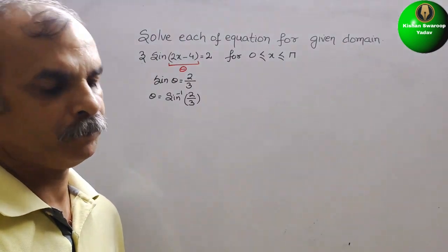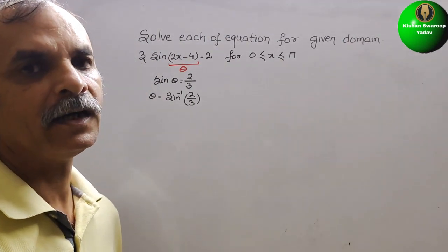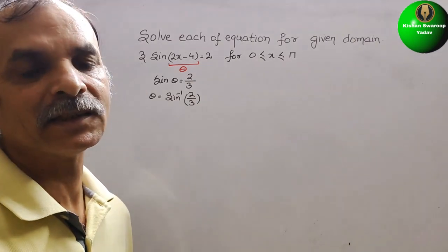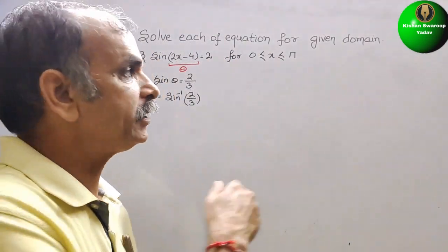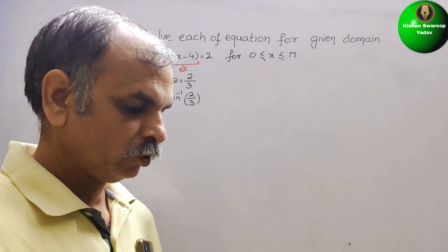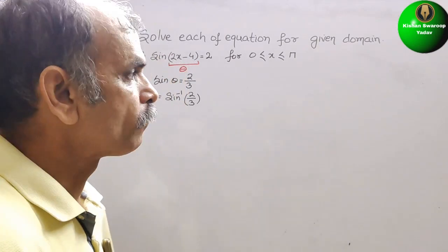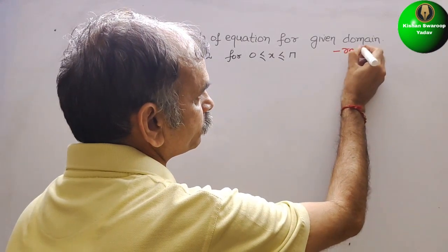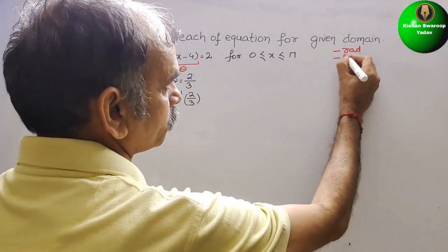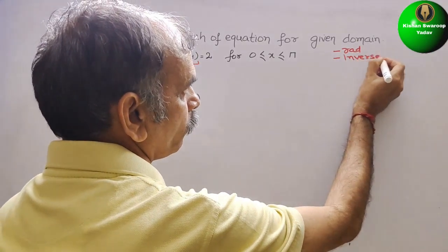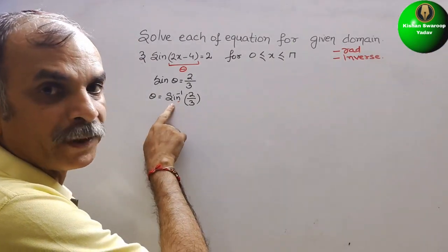Open your calculator and you have to select 2 things. First, select radians — because the domain is given in terms of π, we use radians. Second, select inverse. Then press sin inverse.